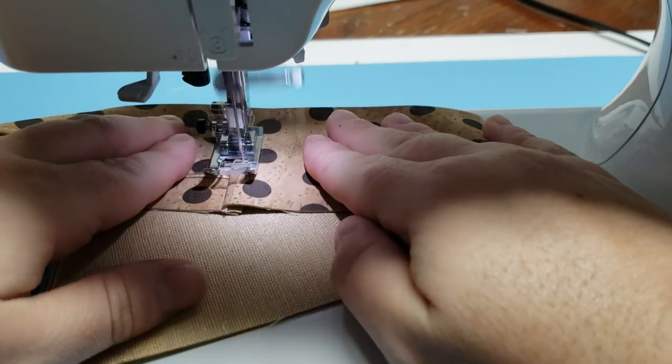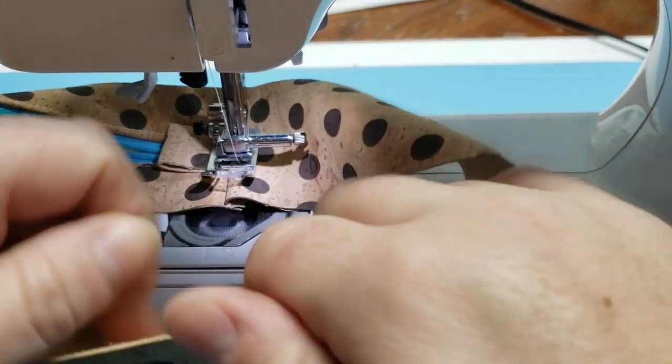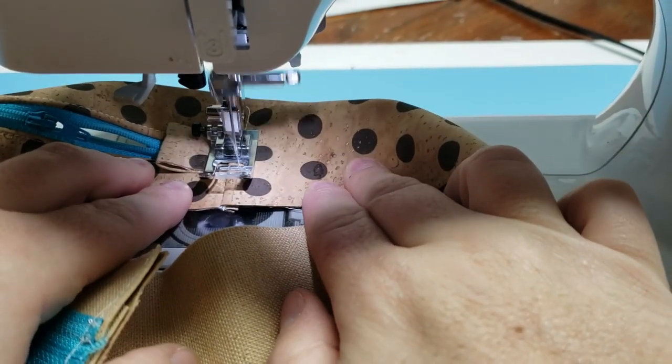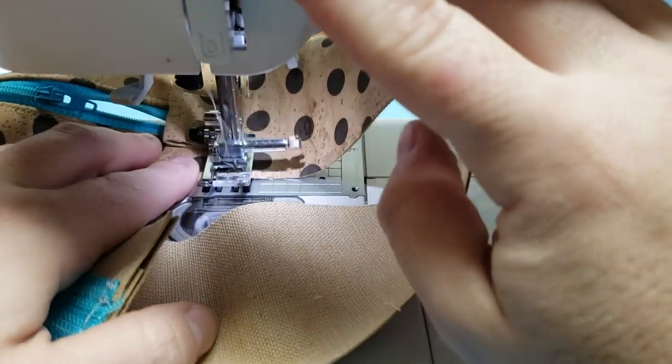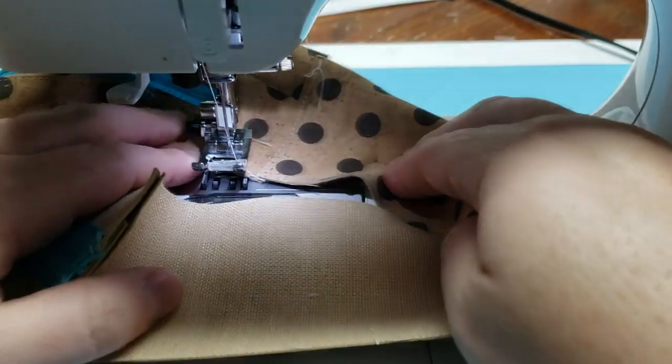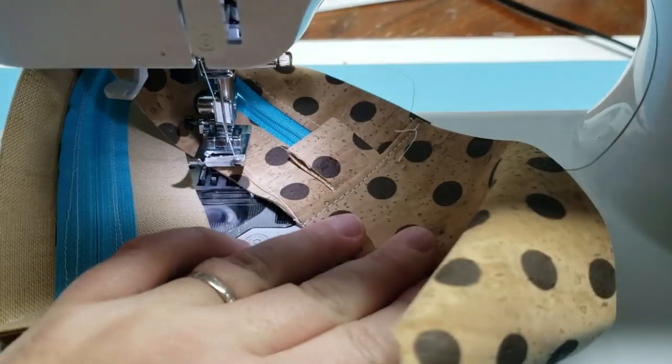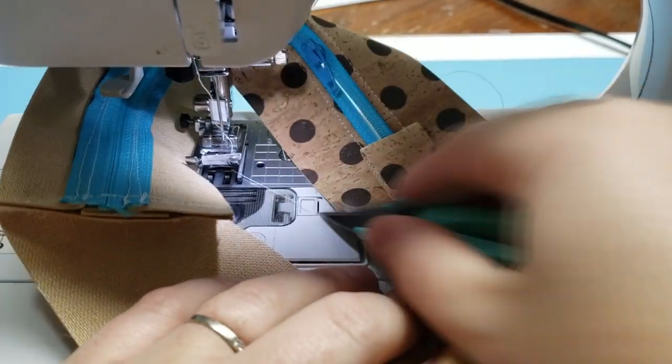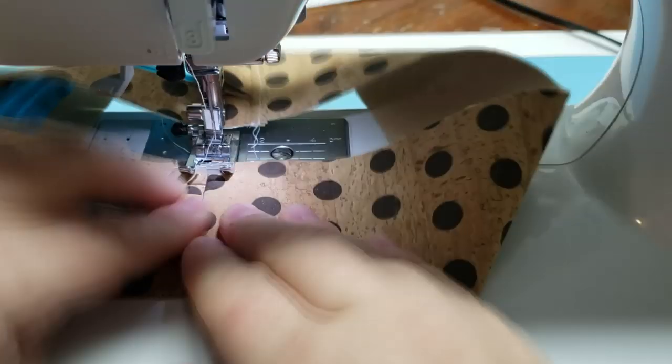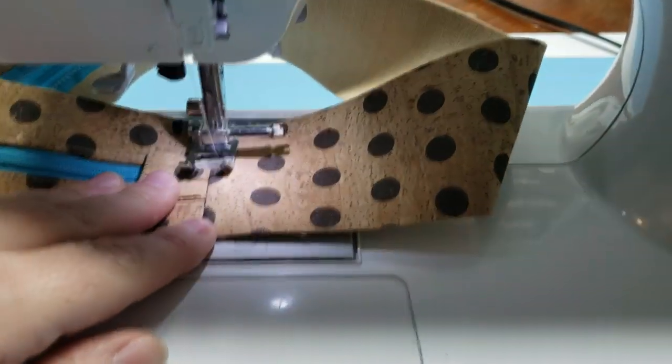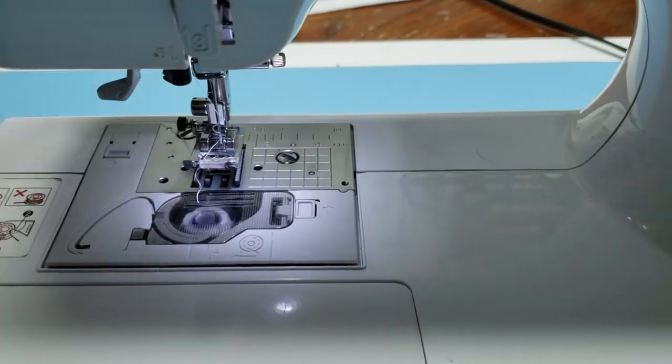Then I'm just going to flip that with the right sides out and do a top stitch right along there. It'll help to make that tab more secure as well as just make it look a little bit more polished. I did that to both sides and then I'm going to start to attach the side panels.